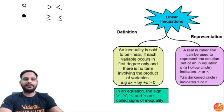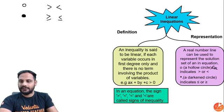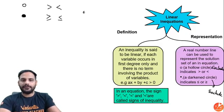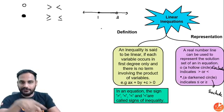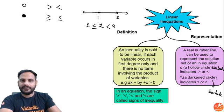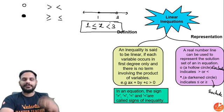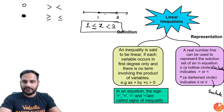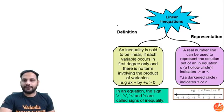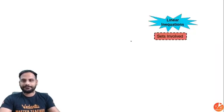In a hollow circle we exclude that point, and in a darkened circle we include that point also. For example, if here it is 1 and here it is 3, and this is my solution set for values of x, you can clearly say x is greater than or equal to 1 but x is less than 3. I am including 1 but not including 3.